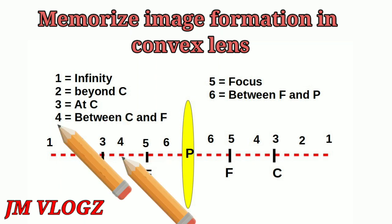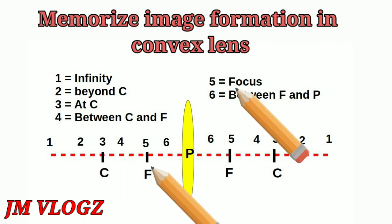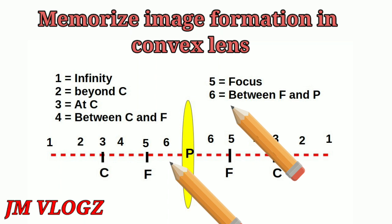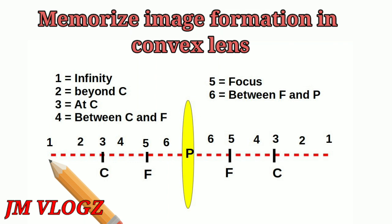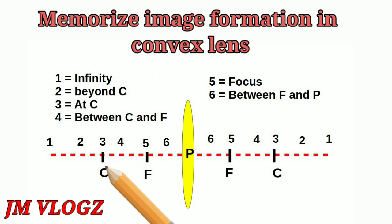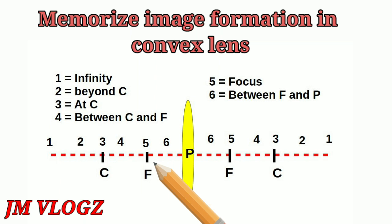The next point, marked 3, is at the center of curvature C. In between C and F we mark point 4. Then on focus we mark 5. Between focus and pole we mark 6. So we get six numbers: infinity is 1, beyond C is 2, center of curvature is 3, between center of curvature and focus is 4, at focus is 5, and between focus and pole is 6.